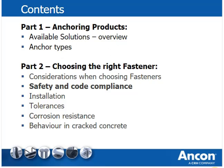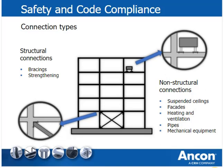The next chapter deals with safety and code compliance. Connections are divided into structural and non-structural connections. Structural connections are critical to the stability of the structure, like bracings or strengthenings, while non-structural connections connect items not critical to stability, like suspended ceilings and supply lines. Structural connections are subject to higher safety standards. Some asset owners like road authorities ban certain kinds of anchors based on the type of connection.